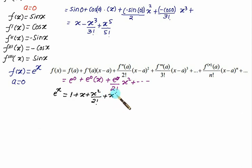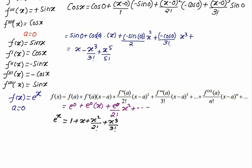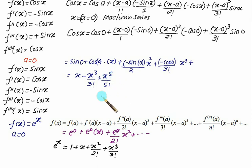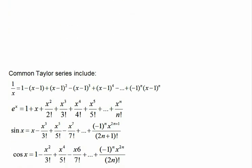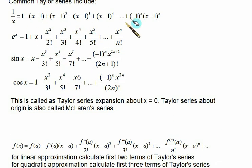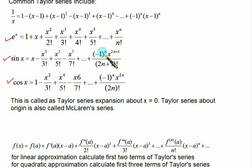To summarize the standard series: for e^x, all terms are present and all signs are positive. For sin(x), we have alternating plus-minus terms with only odd powers. For cos(x), we have even powers with alternating plus-minus signs. So odd powers indicate sin(x), even powers indicate cos(x), and all powers with positive signs indicate e^x.